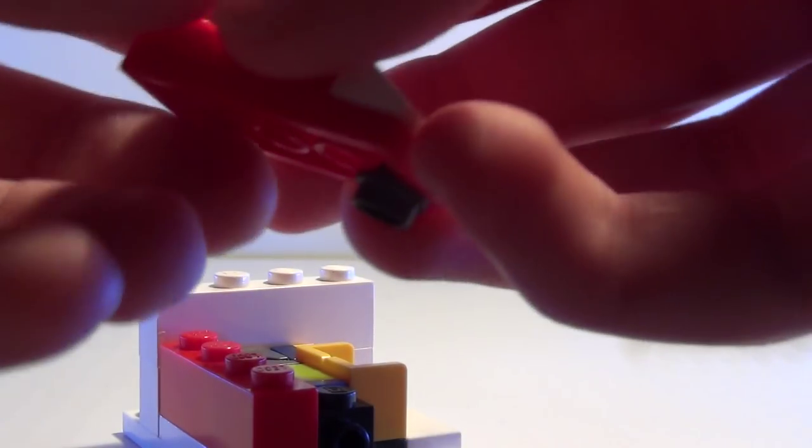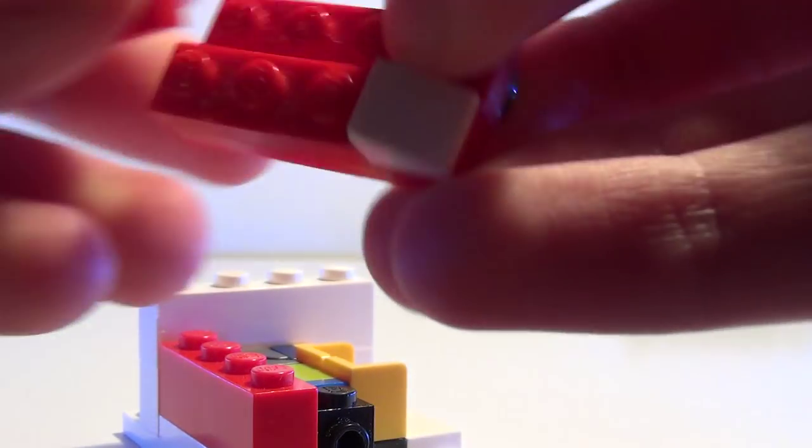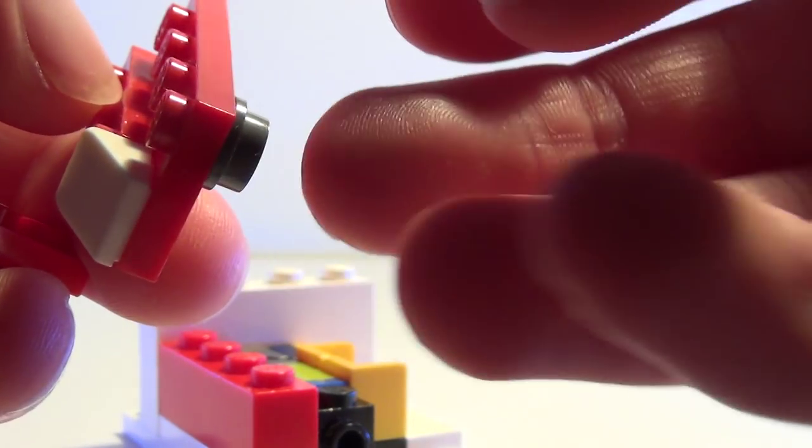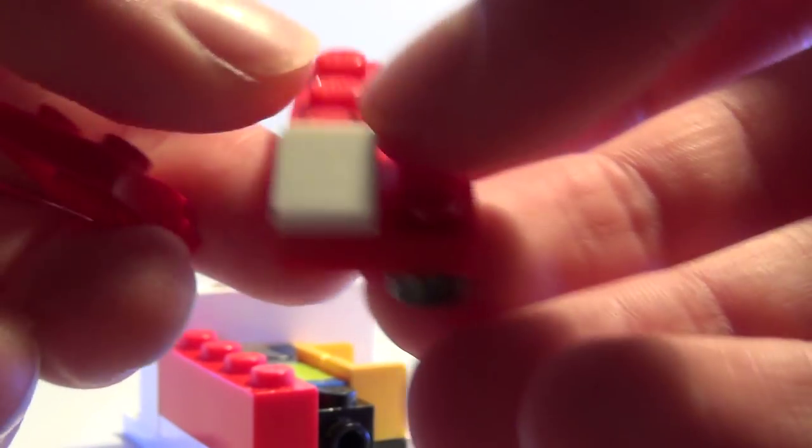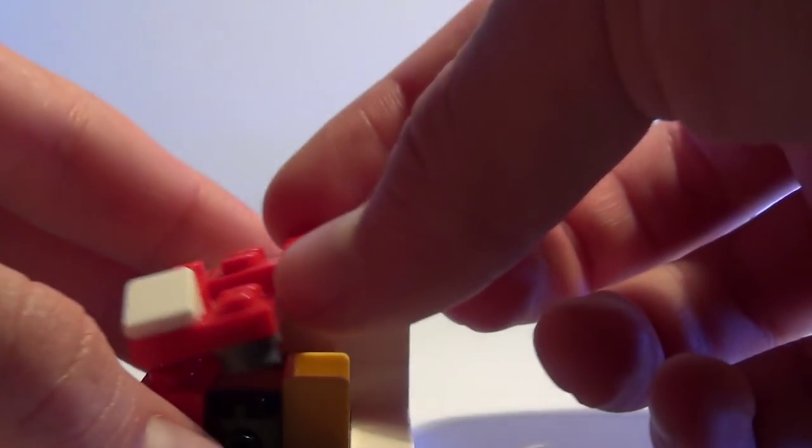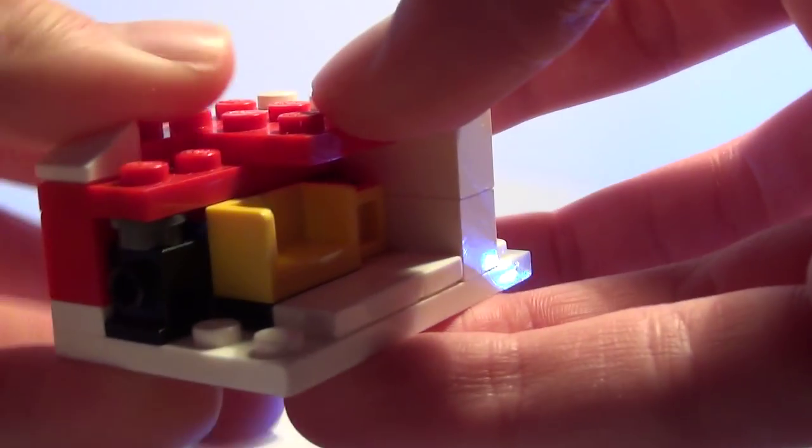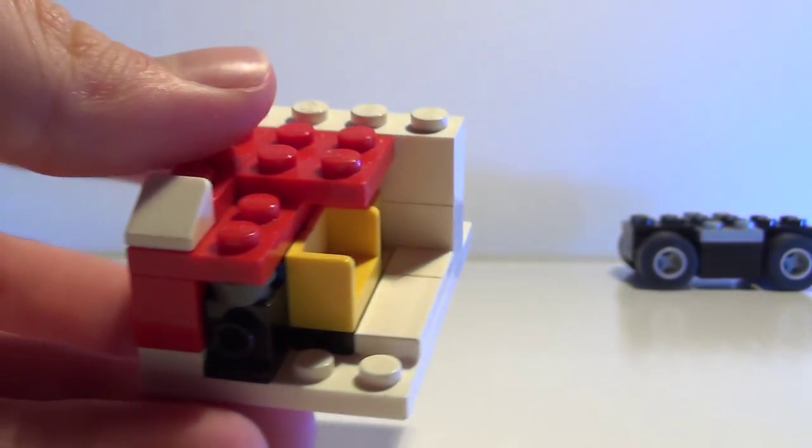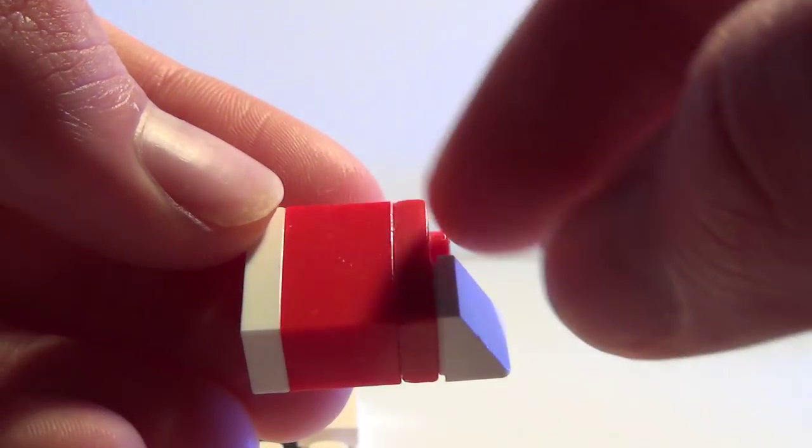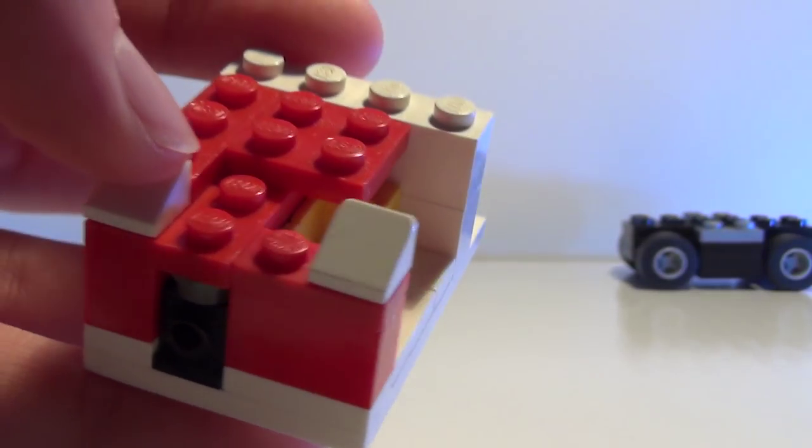On top of here you want to take a 2x4, 1x3 here and a sloped piece here and 1x1s here. Put it like this and then a 1x1, 1x1 brick and 1x1, and this, another one of this and put it there.